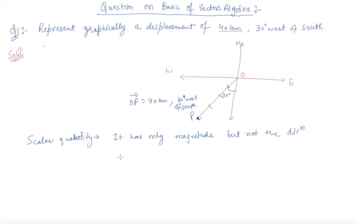Like if I say 5 kg of sugar, so this is a scalar quantity. If I am saying that 5 kilometers towards north, means I have specified the direction also, so this is a vector quantity. Okay, so this is the difference between a scalar quantity and a vector quantity.